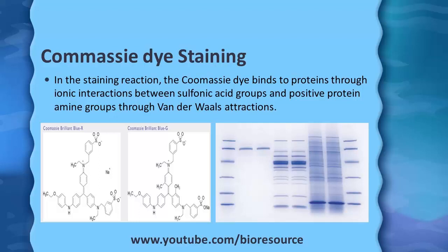In the staining reaction, Coomassie dye binds to proteins through ionic interaction between sulfonic acid groups and positive protein amine groups, as well as through van der Waals interactions. This is the basic principle of Coomassie dye staining. The gel needs to be fixed initially, and the Brilliant Blue dye is prepared in an acetic acid solution.